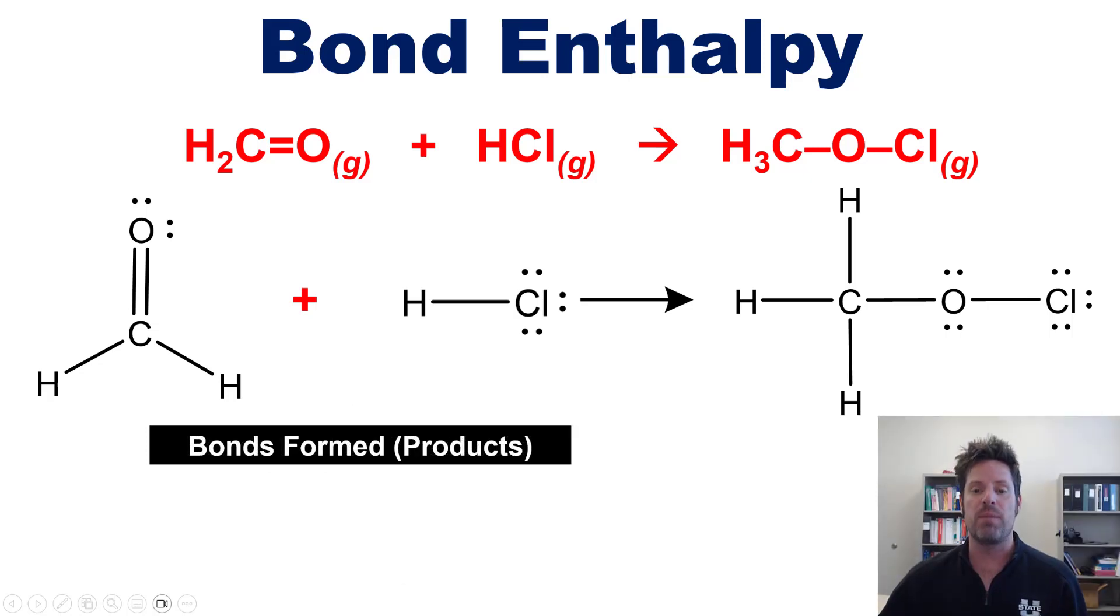Now we'll do the same thing for the bonds formed, that is our products. As we look over here, you can see that there are one, two, three carbon hydrogen single bonds, there is one carbon oxygen single bond, and there is one oxygen chlorine single bond. Where does the math take us on this one?